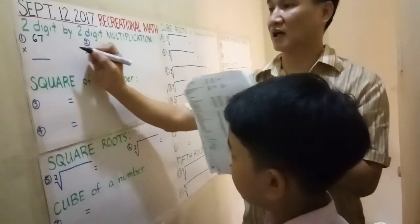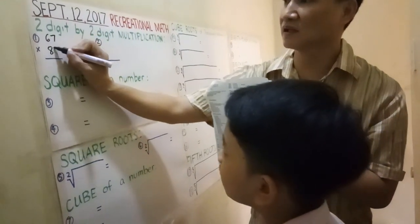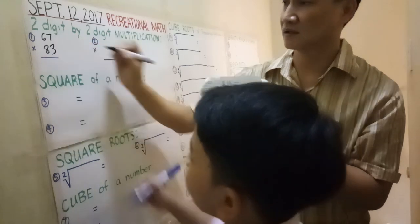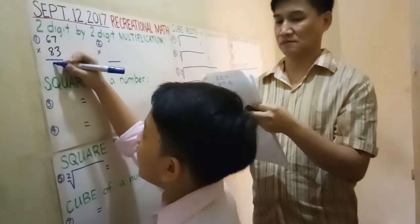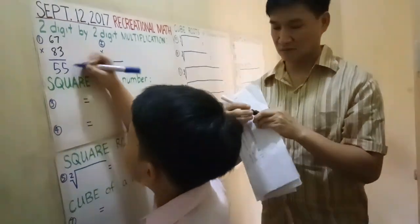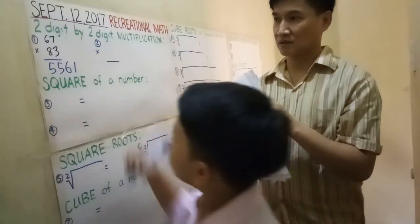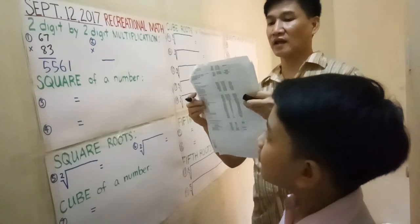67 times 83. Answer: 5, 5, 6, 1. That's correct.